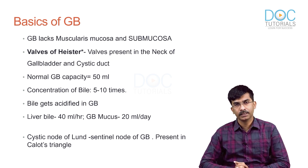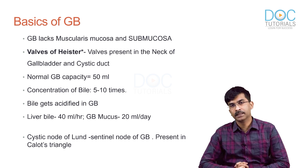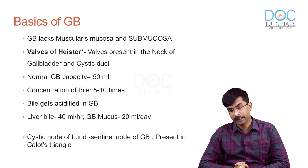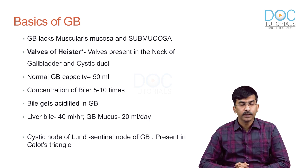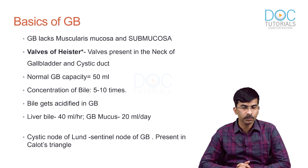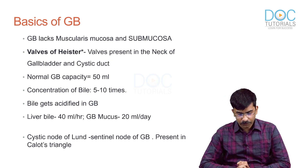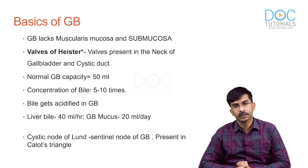The normal GB capacity is 50 ml, but it is able to concentrate bile 5 to 10 times. For example, 500 ml of bile entering from the liver into the gallbladder can be concentrated to yield 150 ml of bile. The bile actually gets acidified in the GB - liver bile is more alkaline, slightly acidified to near pH 7.4 or even less by the GB. Liver bile is produced at a rate of 40 ml per hour, but gallbladder bile is 20 ml per day.